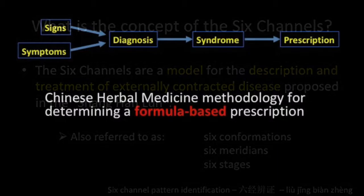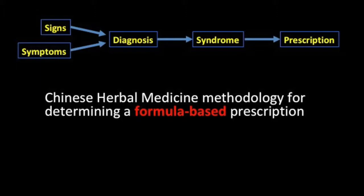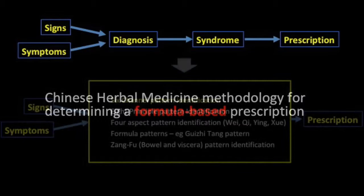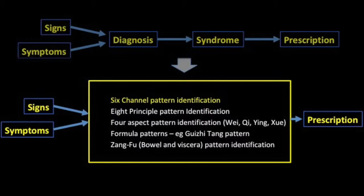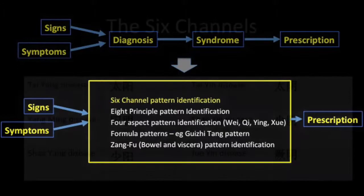A practitioner of traditional Chinese medicine arrives at a prescribed treatment by observing and recording patient signs and symptoms. On the basis of the diagnosis, the doctor will determine a syndrome, which will indicate an appropriate treatment. The different methodologies that can be used include the six channel theory, the eight principle patterns, four aspect pattern identification, formula patterns, and zangfu pattern identification.